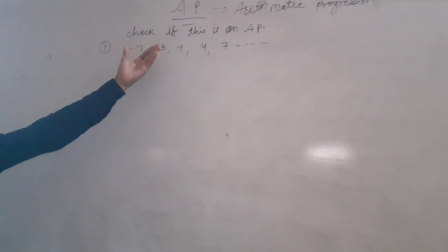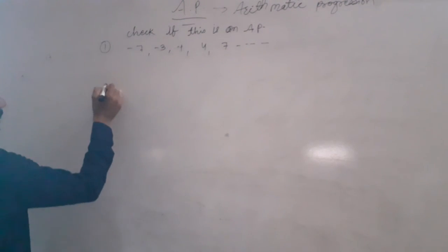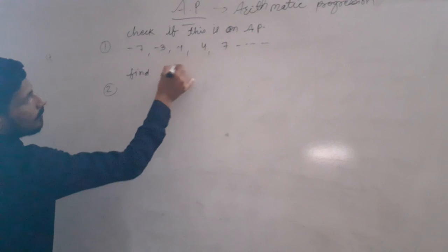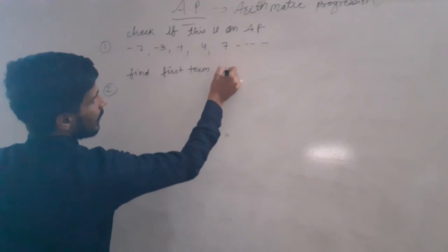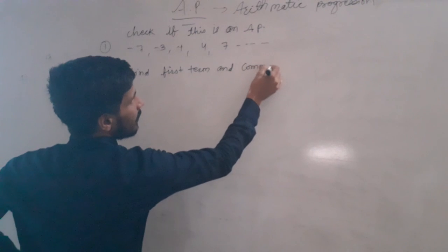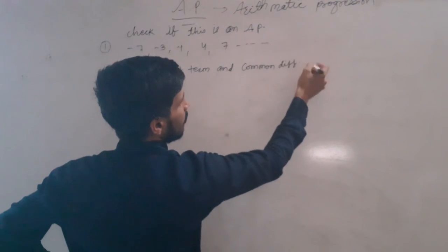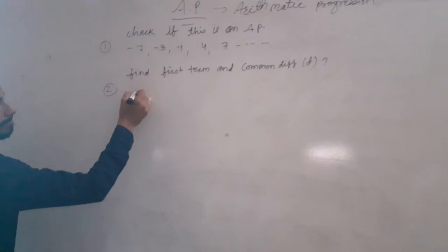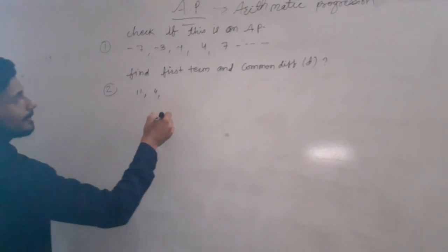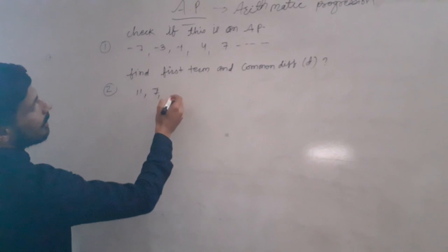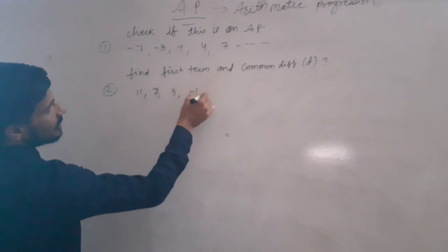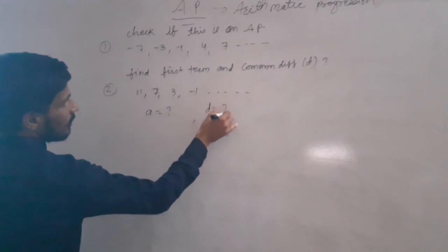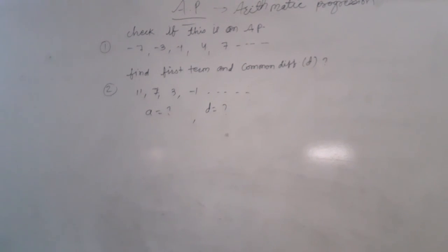You have to check whether a given sequence is an AP or not, and also find the first term A and the common difference D. For example, the sequence: 11, 4, 7, 3, minus 1 and so on. Find A and D for this progression.